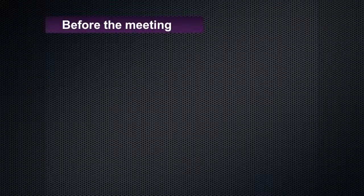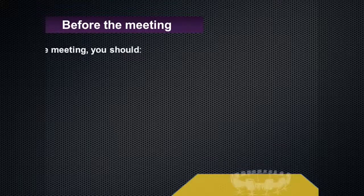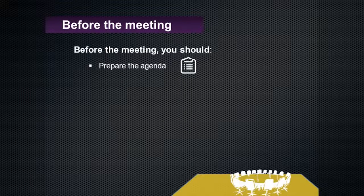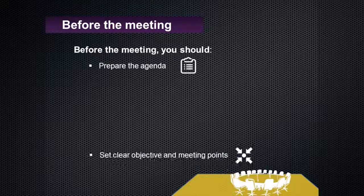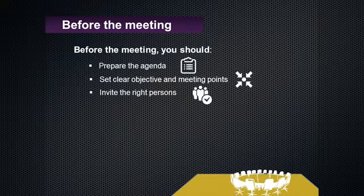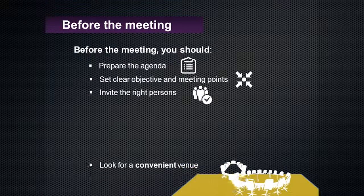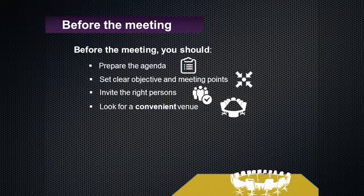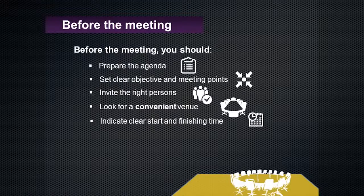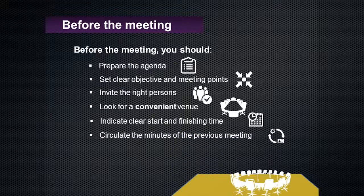This is a step-by-step presentation on things that can be done to ensure the effectiveness of the meeting. Before the meeting, you should prepare the agenda based on the previous meeting. If it's the first meeting, the agenda points should mainly cover introducing each other and setting the objective for the functionality of the cluster. Set a clear objective and meeting points, ensure you have the right people attending, look for a convenient venue that is safe, comfortable and suitable for all, indicate clear start and finishing times on the agenda, and circulate the minutes of the previous meeting so all participants are aware of previous discussions.